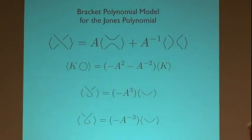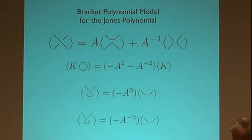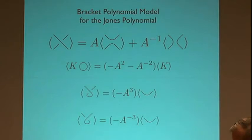I need to review a bracket polynomial model for the Jones polynomial and the usual formalism for categorifying that, due to Khovanov. So the first part of the talk is going to be some reminders about that, notation, grading, and things like that. Here's the bracket polynomial written in the usual form with an A and an A-inverse, with the value of the loop being minus A squared minus A to the minus 2, and it has this framing behavior.